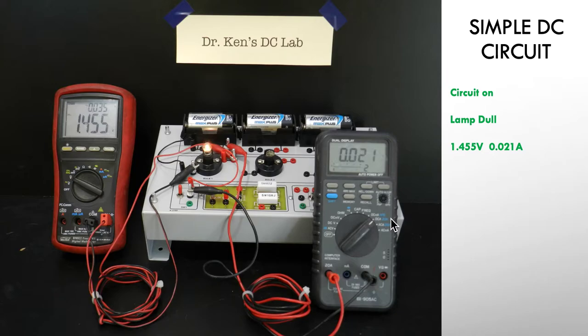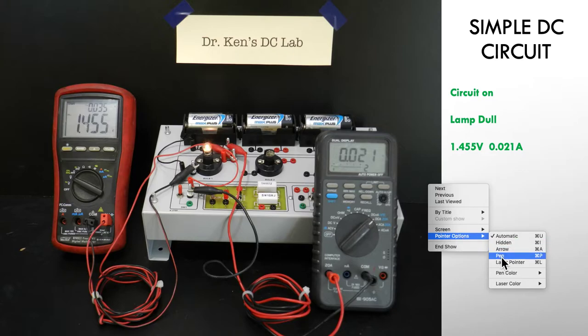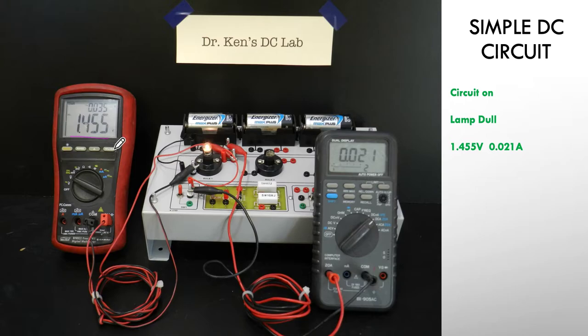So here we are. We've turned our circuit on and you can see the lamp has turned on and it's glowing. We're pulling 1.455 volts and about 0.021 amps or 21 milliamps.